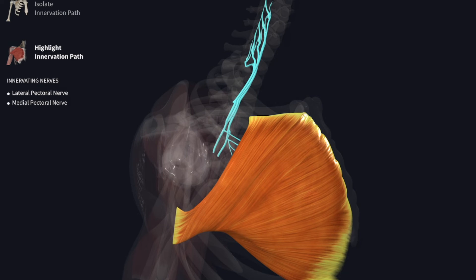The pectoralis major is supplied by the medial and lateral pectoral nerves. The medial pectoral nerve reaches the pectoralis major muscle after piercing the pectoralis minor. The lateral pectoral nerve reaches the muscle by piercing the clavipectoral fascia.